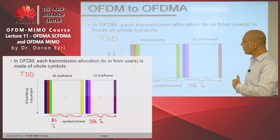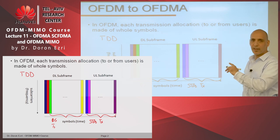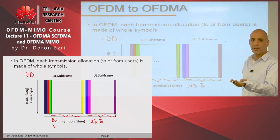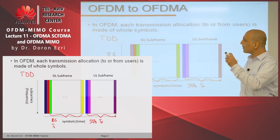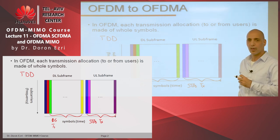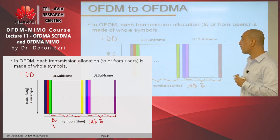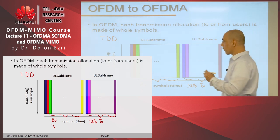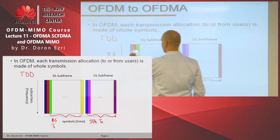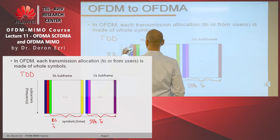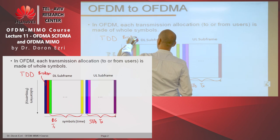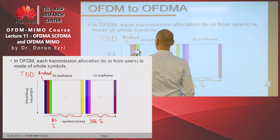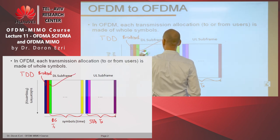In OFDM, the transmission of each side — be that the AP, base station, or the STA — is made of whole or full OFDM symbols. So for example, in this symbol I'm transmitting maybe a broadcast to everybody, and in this symbol maybe I'm transmitting to a specific device.